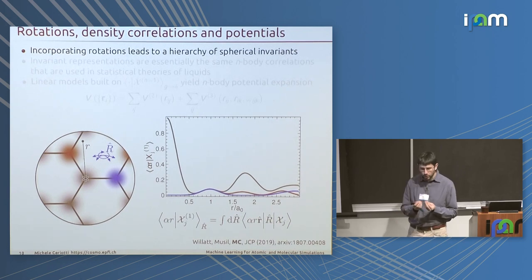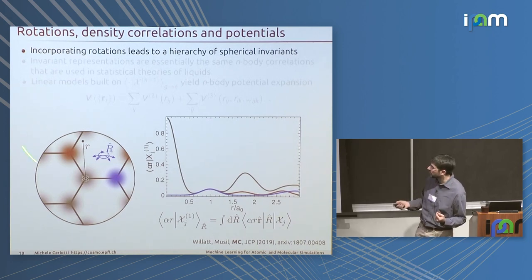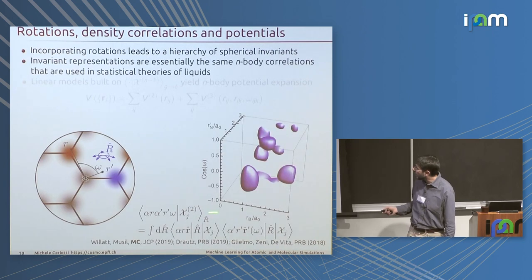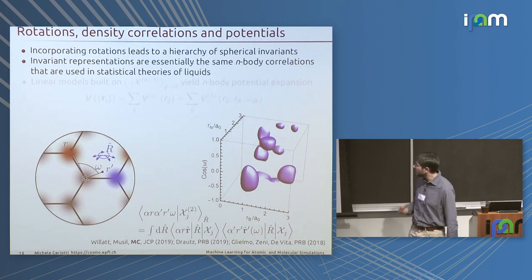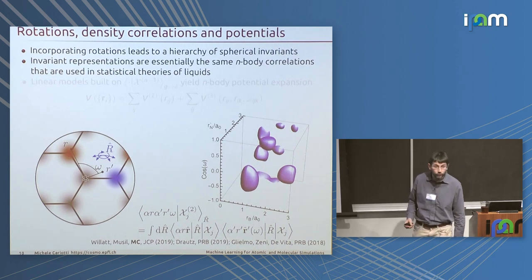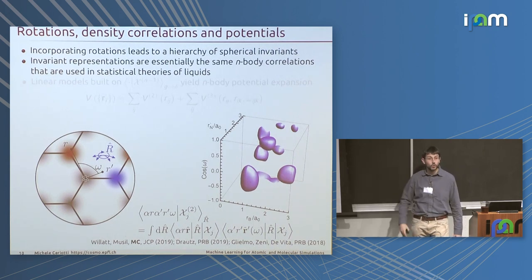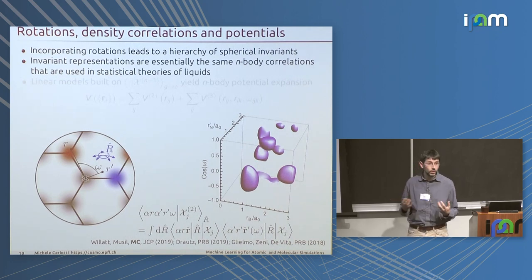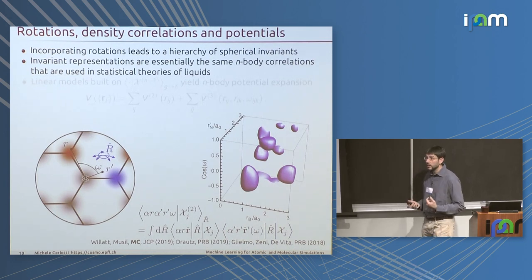Since the pair correlation function only depends on distance between atoms, it doesn't give a very complete description of the arrangement of atoms around your central point. So you take higher-order tensor products of the atom-centered density and symmetrize them, obtaining three-body correlation functions, then four-body, and so on. The objects arising from this series of symmetrizations are essentially the same n-body correlation functions that people have used to study the statistical mechanics of liquids for a hundred years.